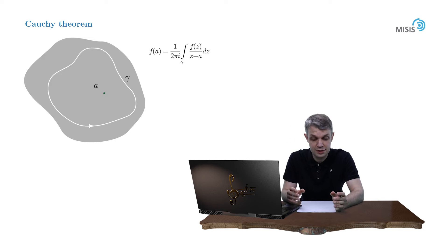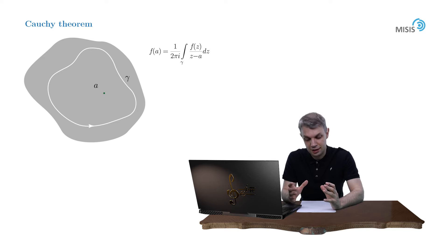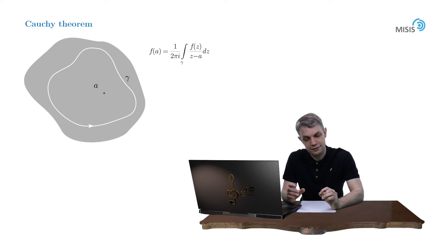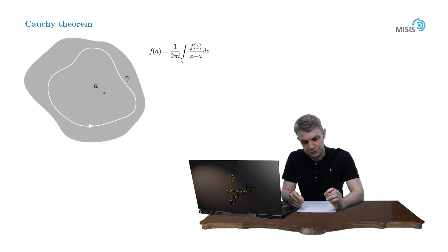The peculiarity of this statement is as follows: our function is holomorphic inside the contour, and for any point inside this contour, the function f is completely determined by its values on the boundary of this contour.